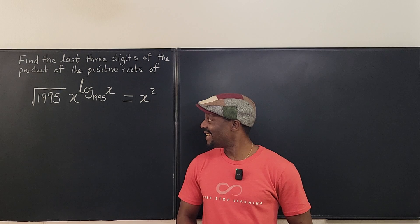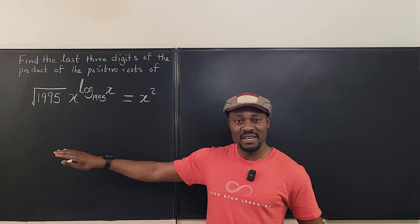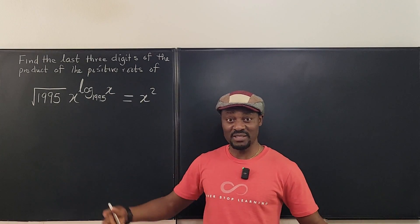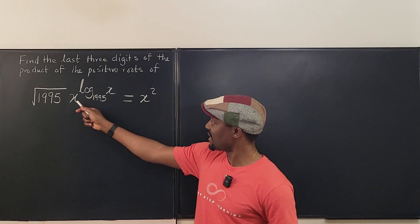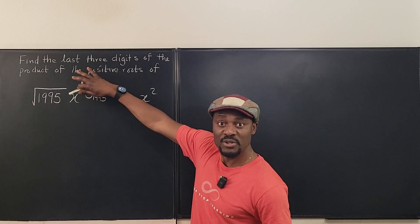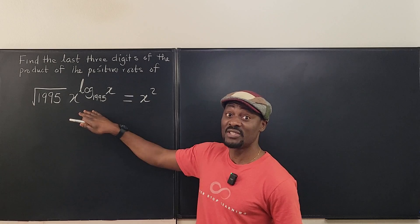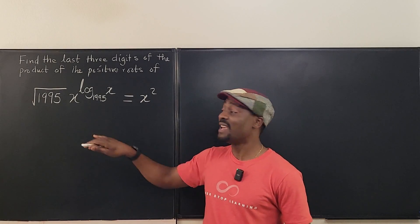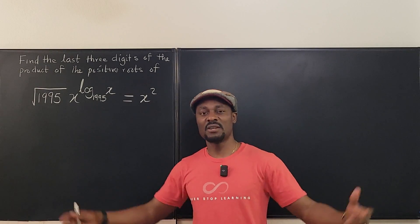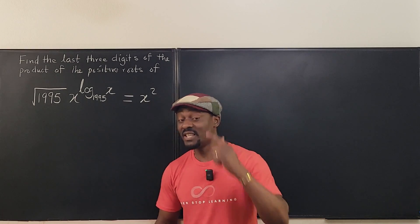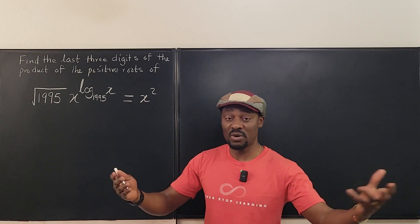Welcome to another video. We have what I'm not sure is a logarithmic, radical, or exponential equation — because there's a radical here and an exponential component, but it is a logarithm and the base is 1995. This question is actually from the 1995 AIME — the American Mathematics Invitational Examination — an invitation for those who think they're smart, to be tested and selected for competition teams.